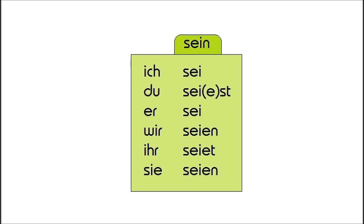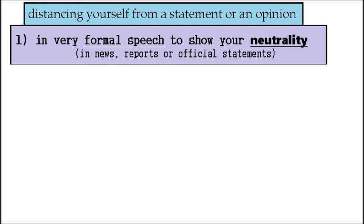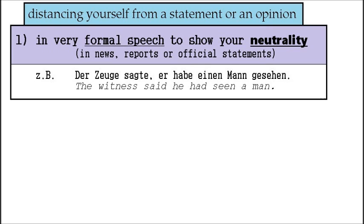Now let's look at when to use it. It is used for distancing yourself from a statement or an opinion. Three typical situations: Number one — in very formal speech, to show your neutrality, typically in news, reports, or official statements. For example: 'Der Zeuge sagte, er habe einen Mann gesehen' — 'The witness said he had seen a man.'